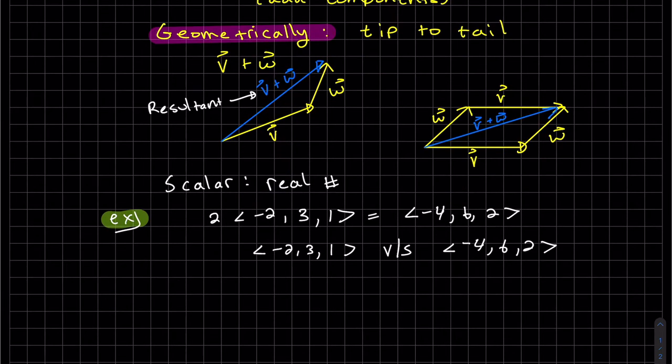So you can see minus four, six, two was the resultant of multiplying this vector by two. So the difference between these two vectors, when you multiply through by a scalar, we did here, then these are parallel.